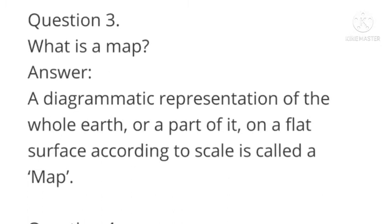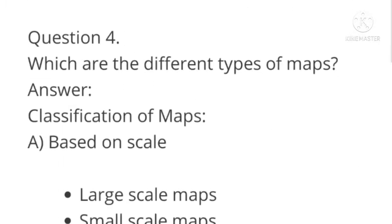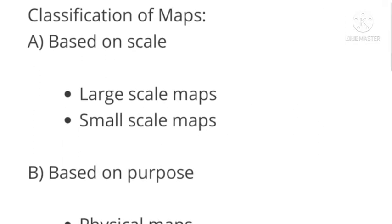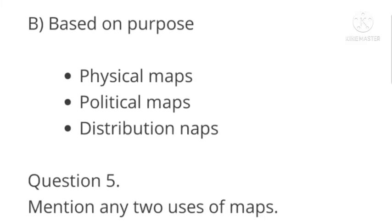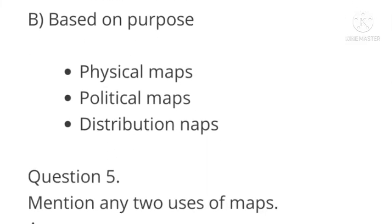Question number four: What are the different types of map? Answer: Classification of maps based on scale: large scale maps, small scale maps. Based on purpose: physical maps, political maps, distribution maps.